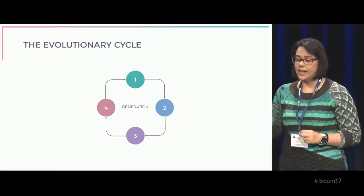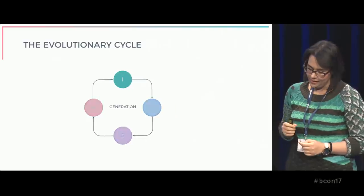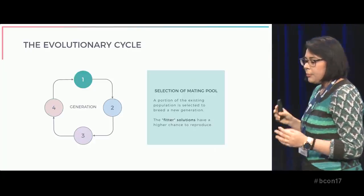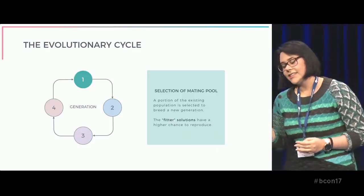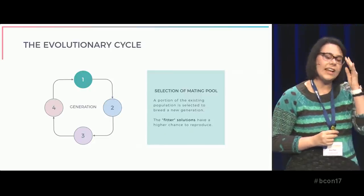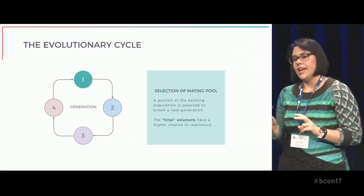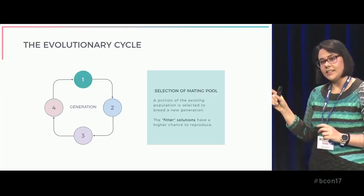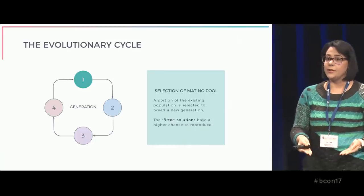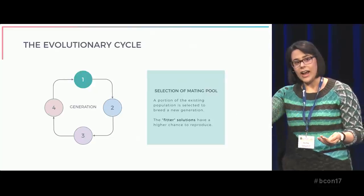The algorithm execution is called evolution, and it is an iterative process. Each iteration is called a generation and can be roughly divided into four steps. The first step of a generation is the selection of the mating pool. A portion of the existing population is selected to breed a new generation. The selection process ensures that only the fitter solutions have a higher chance to be selected, to survive, and to reproduce — here we walk into the natural selection metaphor, where individuals best adapted to the environment are more likely to survive.